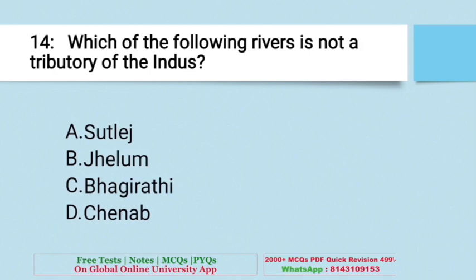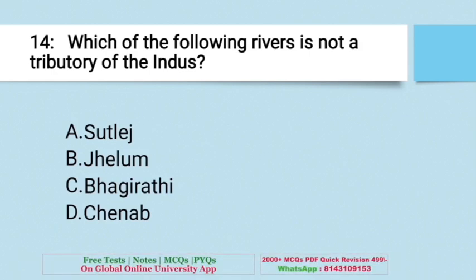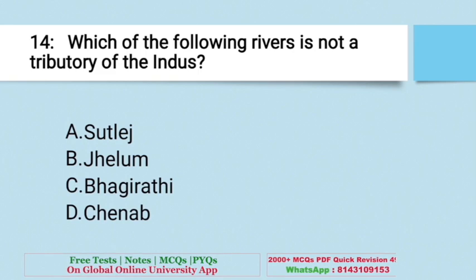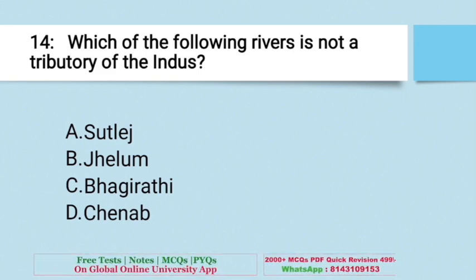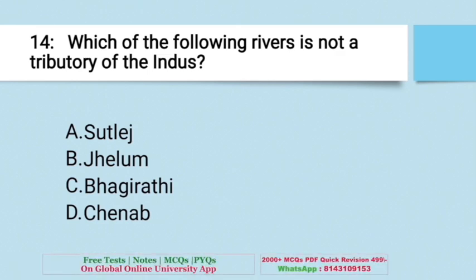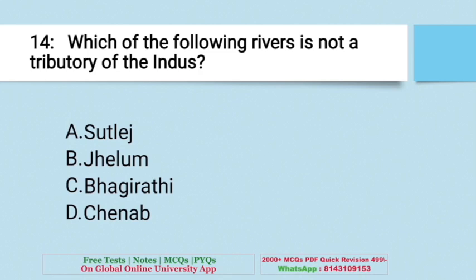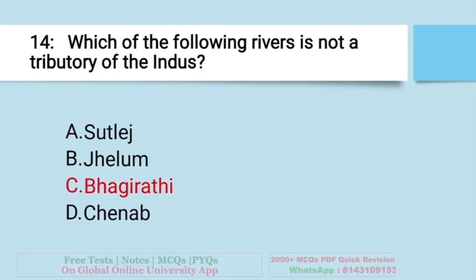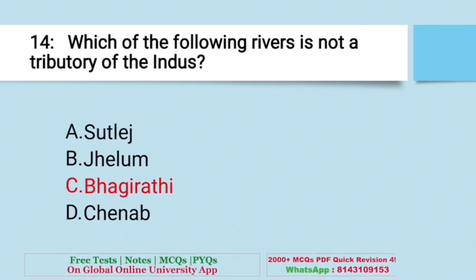Question: Which of the following rivers is not a tributary of the Indus? A. Satlaj, B. Jhelum, C. Bhagirathi, D. Chenab. The right answer is C — Bhagirathi.